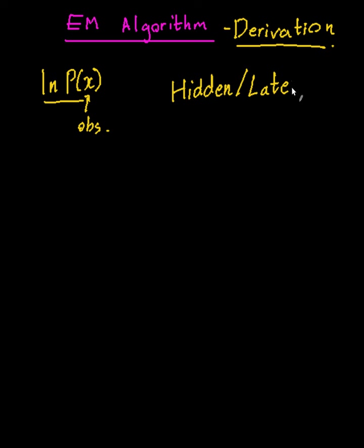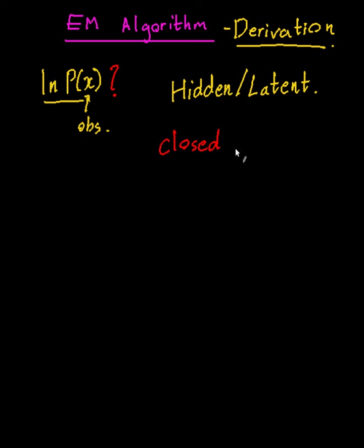Now sometimes these hidden and latent variables are quite obvious as to what they're supposed to be, and sometimes they're not. But regardless, if they're not obvious you can introduce them. The reason we need to use the EM algorithm is that maximizing the log probability of the data is not tractable — there is no closed-form solution to the log probability of the data. So instead, you introduce hidden variables to make it tractable.